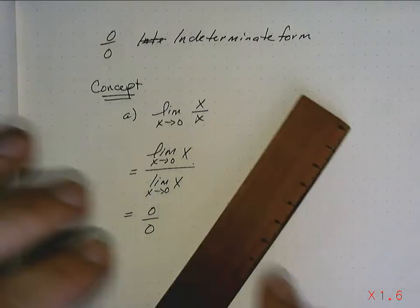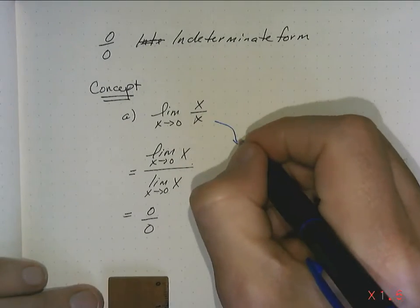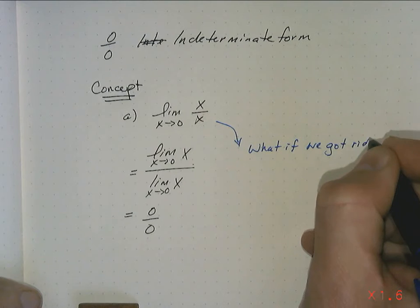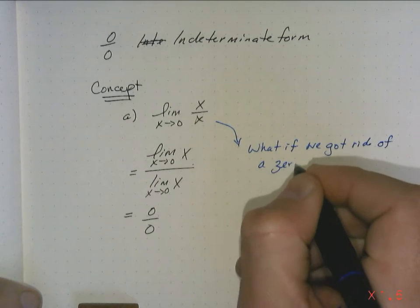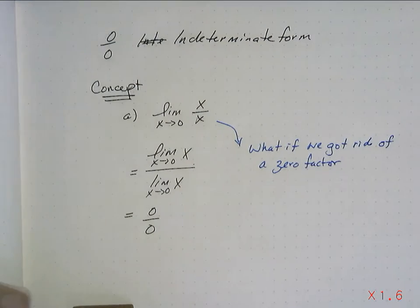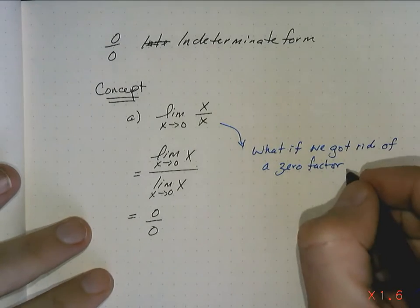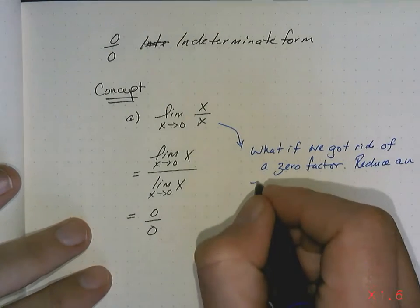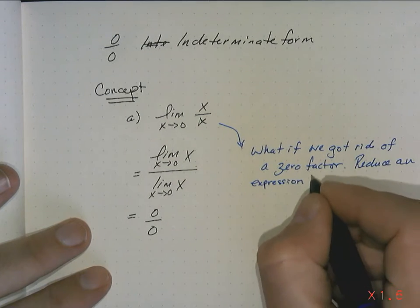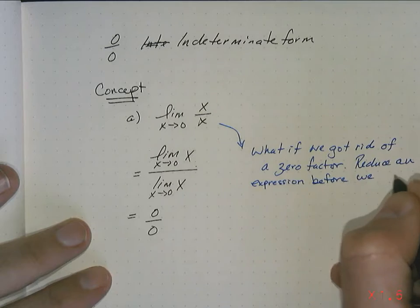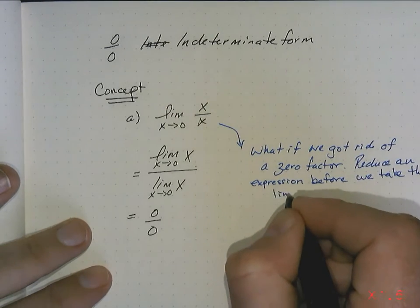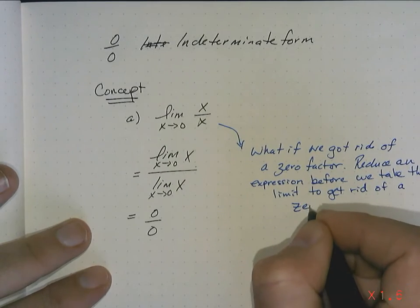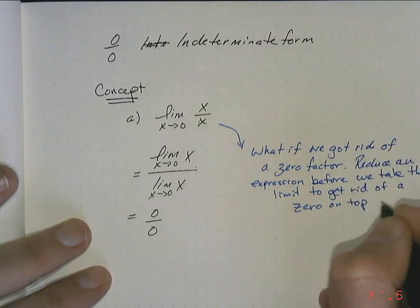But what if we did it a little bit differently? What if we got rid of a 0 factor? What if we reduce an expression before we take the limit to get rid of a 0 on top and bottom?